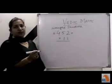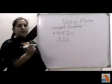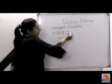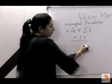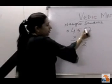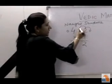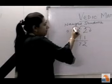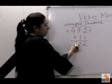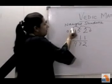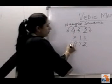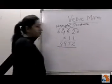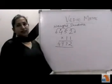And add the numbers in pairs: 0 plus 2 is 2, 2 plus 5 is 7, 5 plus 4 is 9, 4 plus 0 is 4. My answer is 4, 9, 7, 2.